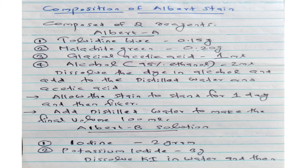What are the compositions of Albert stain? Albert stain is composed of two reagents: Albert's A and Albert's B solution. The Albert's A solution contains Toluidine blue 0.15 gram, malachite green 0.20 gram, glacial acetic acid 1 ml, and alcohol (95% ethanol) 2 ml.